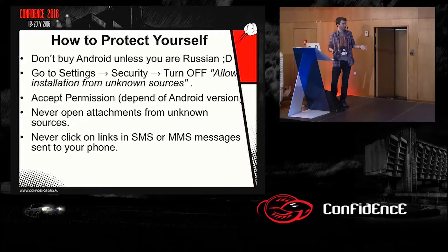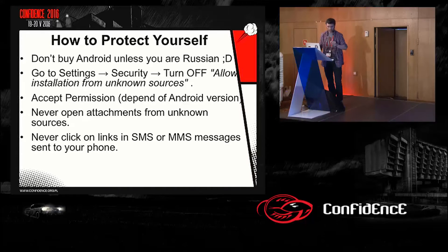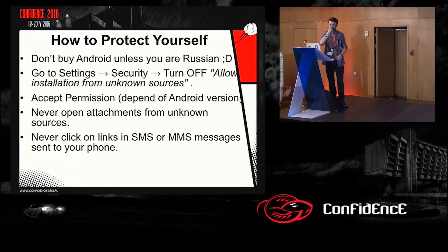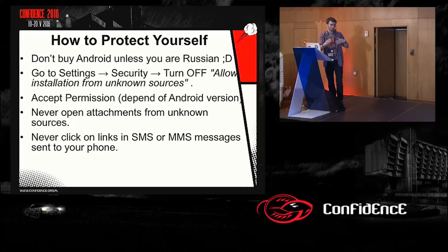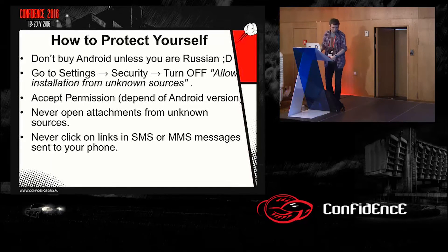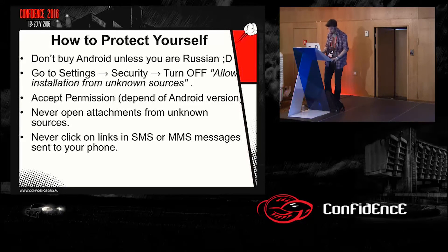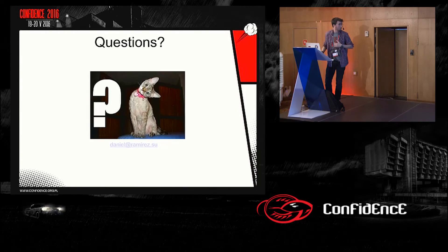So how can we protect ourselves? Turn off the 'allow installation from unknown sources' setting. Regarding app permissions, it depends on the Android version — in Android 6.0, all permissions are requested at runtime, like in iOS, so when you open the application it asks if you want to grant each permission. In versions before about 4.4, when installing the application you get a pop-up listing all permissions and must accept them all at once. Never open any attachments from unknown sources, and never click on any link or SMS sent to your phone from an unknown sender.